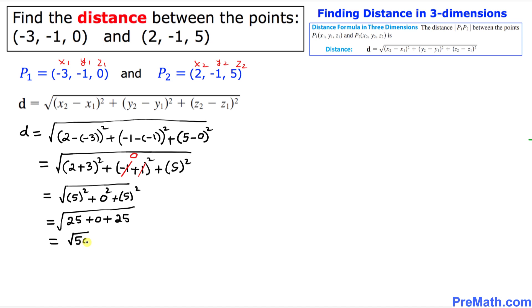...plus 0 plus 25, square root, and this is going to give us square root of 50, which is d equals to that. Now, I can write this square root of 50. I can simplify. We can write 25 times 2, which I can break down a little bit further, which I can split it up: square root of 25 times square root of 2.